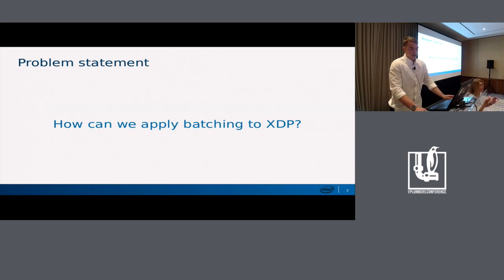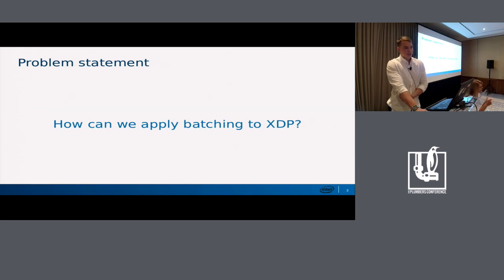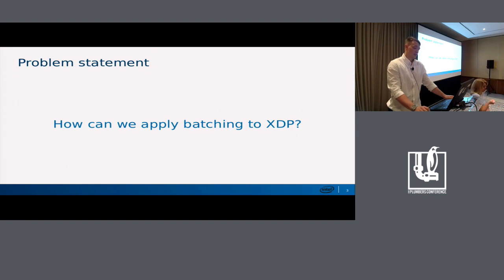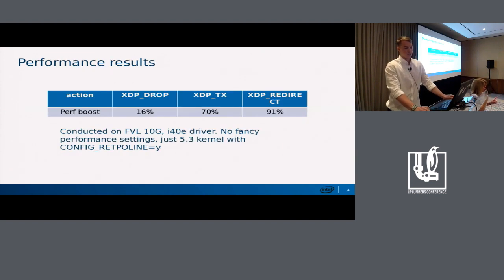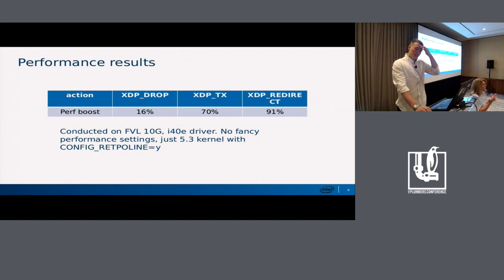As Dave said, batching can improve software performance in a significant way. What if we were batching the XDP buffers in the driver and passing them to the XDP program, so we would have only a single call to the XDP program, and the XDP program would iterate over those frames? It turns out the results are pretty great — I saw almost two times bigger performance for the TX and redirect actions.